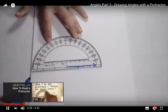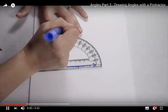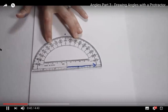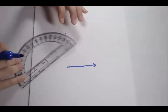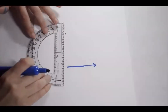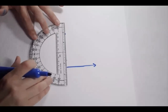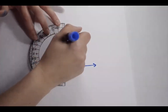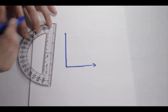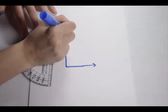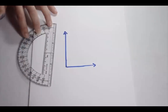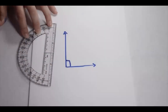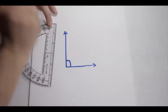For a 90-degree angle, come around to 90 degrees and make a mark. Use the protractor as a straightedge to connect the mark to the bottom ray. Label it with a box in the corner to show it's 90 degrees.